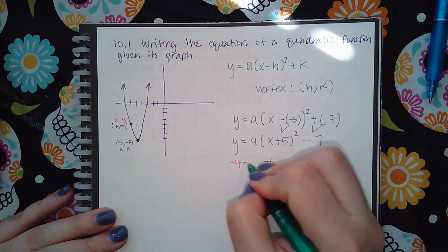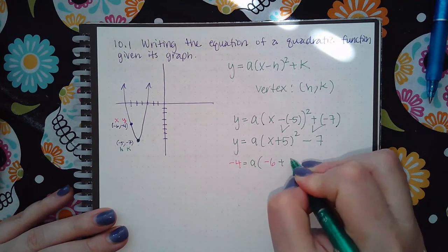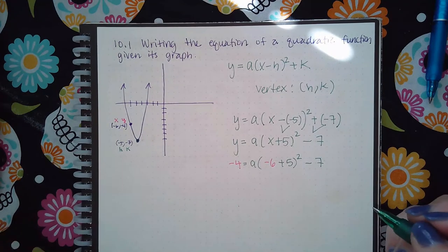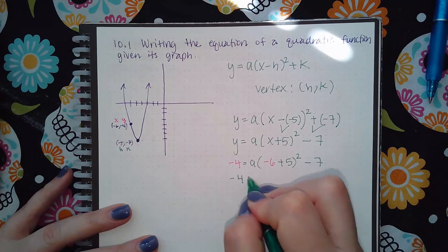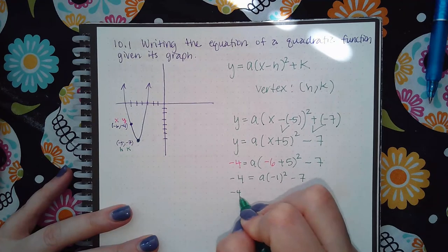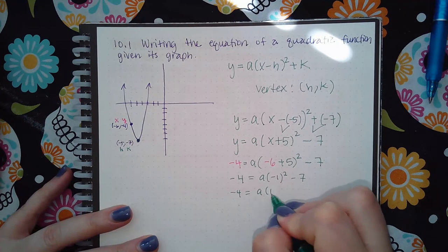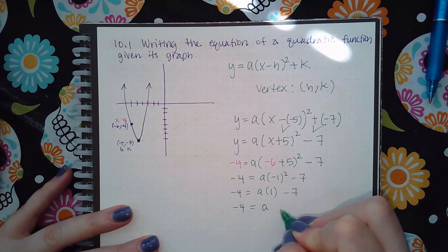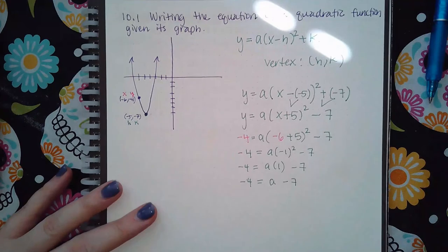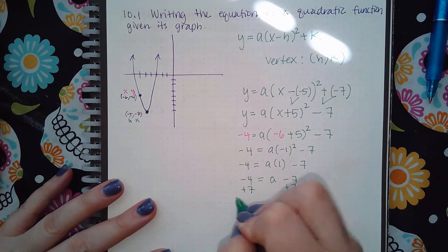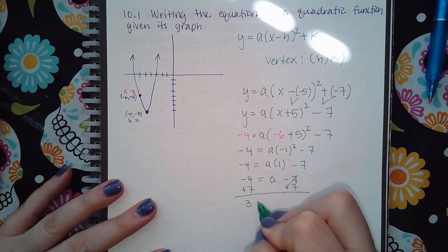And this should make it so that a is the only unknown value in your equation, which means I can now solve for a. So I get negative 1 squared, which is going to be a positive 1, which means I have the equation 1a, or just a, minus 7 equals negative 4. So if I add 7 to both sides, I get that 3 equals a.